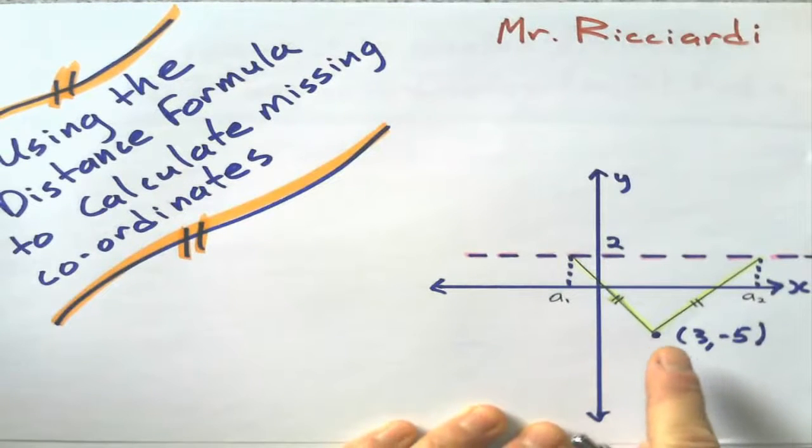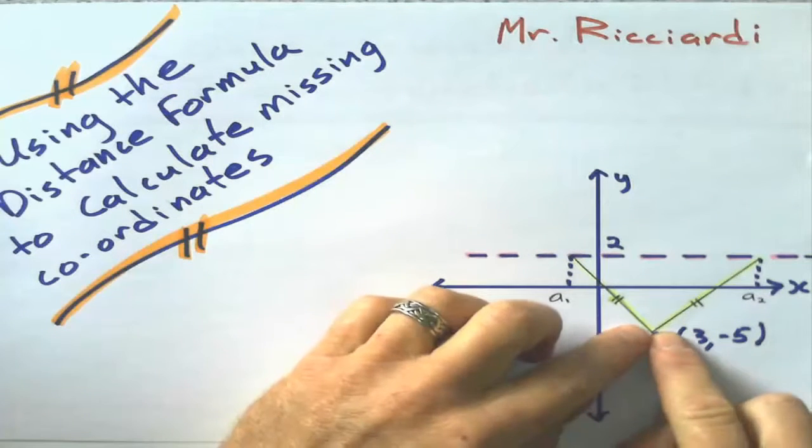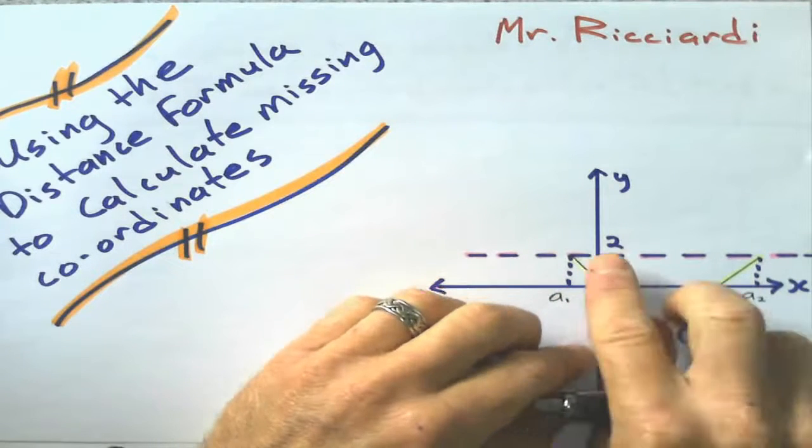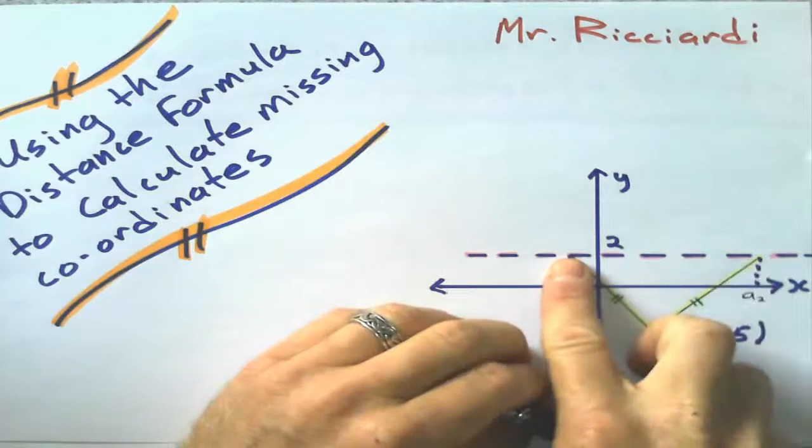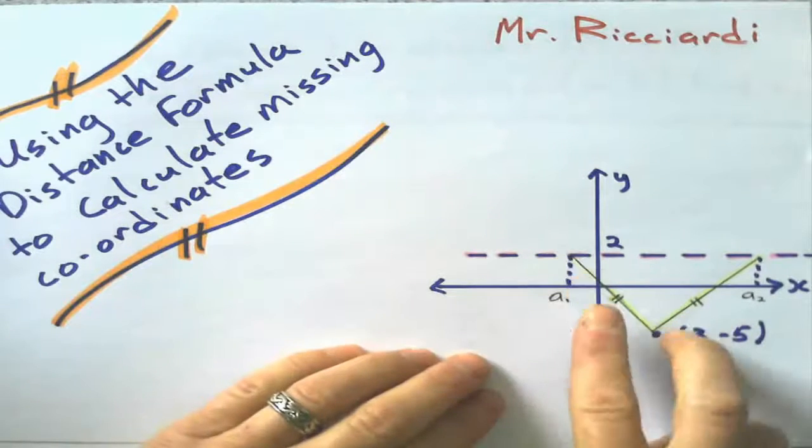And I have this drawing here, because what I'm going to do in this problem is I'm going to give you one coordinate, and I'm going to give you a distance. And then I'm going to give you one part of the other coordinate, like an x-coordinate or a y-coordinate.